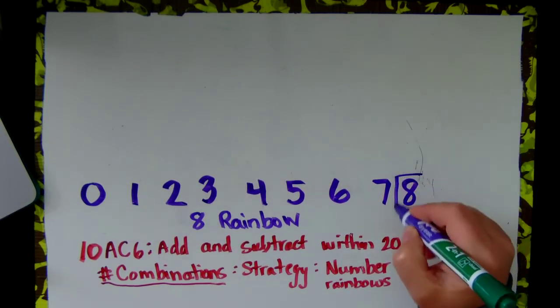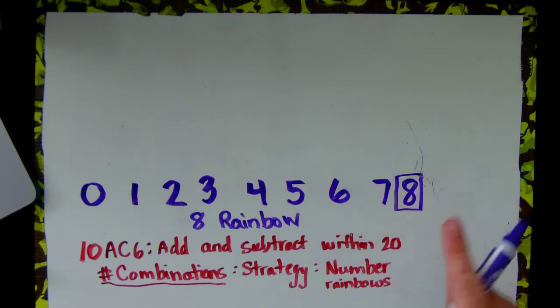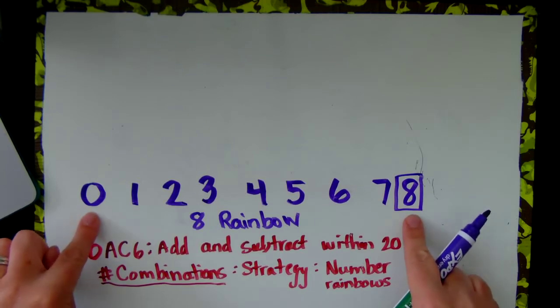8 is the number or the whole that we are going to get every time, the total. So we are going to do 0 plus 8, 8 plus 0.